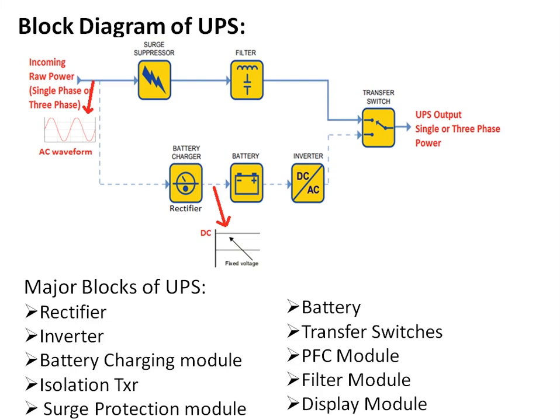The major blocks of the UPS are: a rectifier for converting AC to DC and charging the battery; an inverter which converts DC energy from the battery to AC and supplies it to the load; a battery charging module — since batteries are one of the expensive parts of the UPS, they must be controlledly charged and discharged using a specific module; and an isolation transformer, used when the output requires isolation.